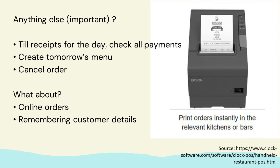Is there anything else we need to think about? Although we will stick to our main design, we still need to understand we may need other information from our database. For example, in a restaurant we may look at all the receipts to check payments, look at different menus for different times of day, or cancel orders when there's a problem. We also need to think about online orders and remembering customer details — these are all considerations when making our database design.